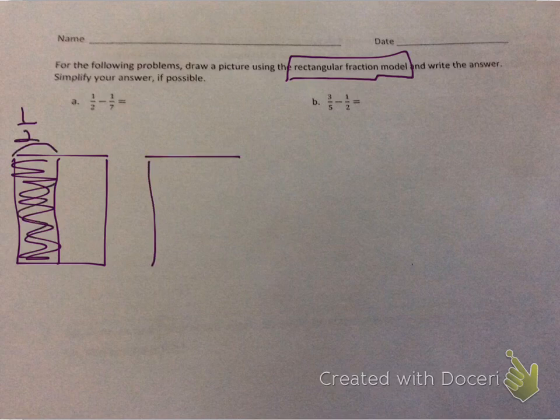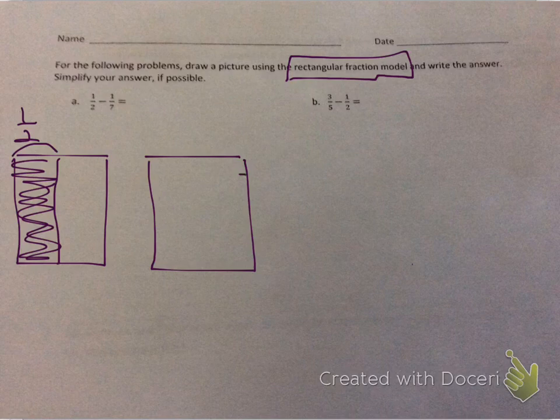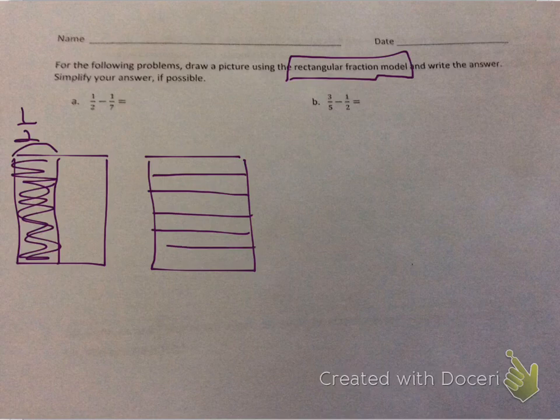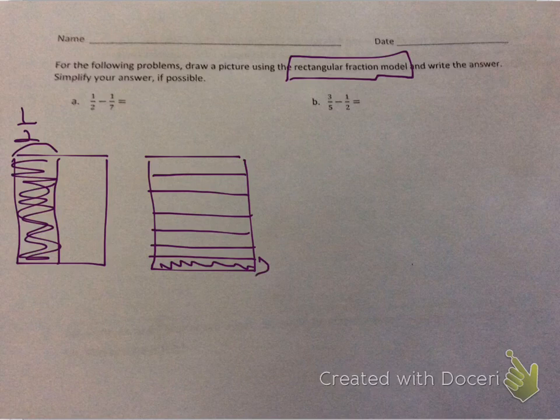Now I'm going to draw the 1/7 fraction model by drawing a rectangle and cutting it into 7 equal parts: 1, 2, 3, 4, 5, 6, 7. They aren't that equal, but it's pretty close, so I'm going to let it go. I'm going to color in one of these—1/7. And I know Mrs. Hendrix is laughing at my drawings right now, and I'm going to ignore that.